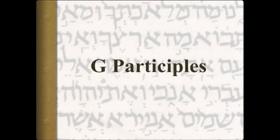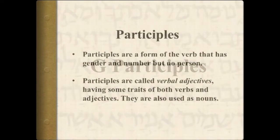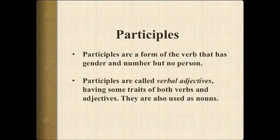In this video, we will look at the G or Pa'al participles, both active and passive. As in Hebrew, participles are a form of the verb that has gender and number but no person. They are called verbal adjectives and have some traits of both verbs and adjectives. They can also be used as nouns.